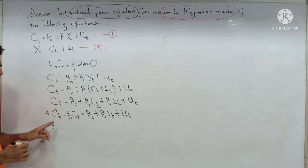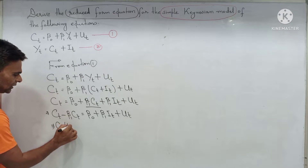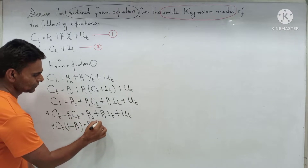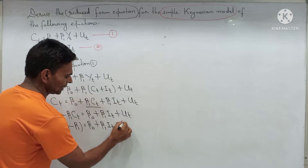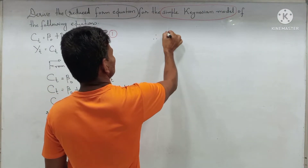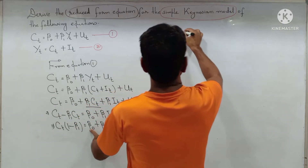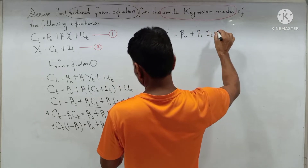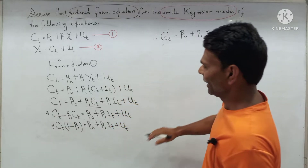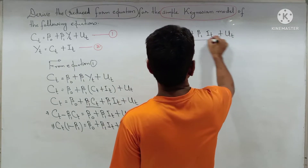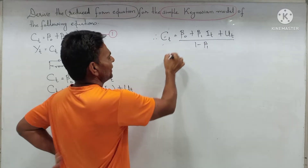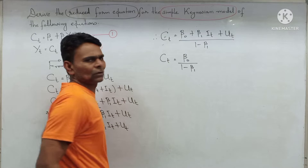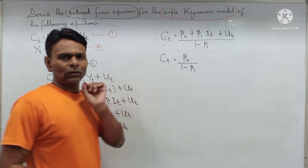Taking Ct as a common factor, we are left inside the bracket with (1 - beta1). So: Ct(1 - beta1) = beta0 + beta1*It + Ut. Therefore, Ct equals (beta0 + beta1*It + Ut) divided by (1 - beta1). Separating all terms with the denominator (1 - beta1), we get: Ct = beta0/(1 - beta1) + beta1*It/(1 - beta1) + Ut/(1 - beta1).